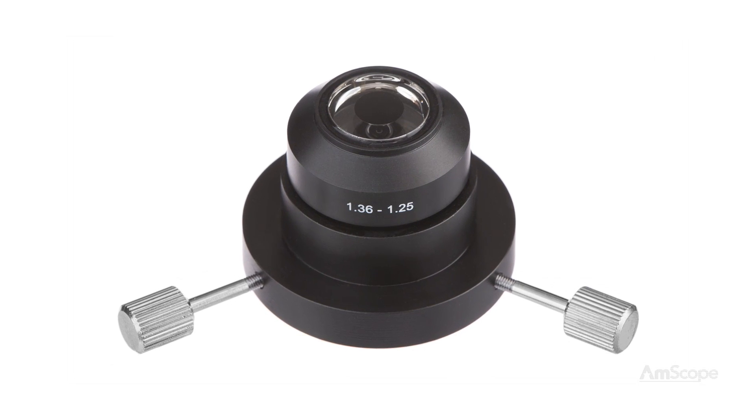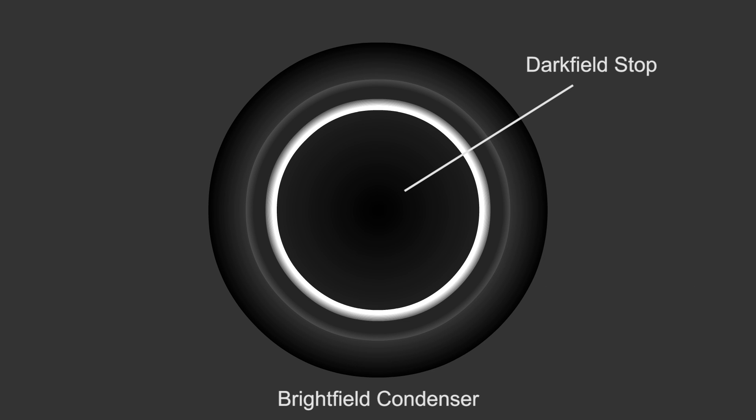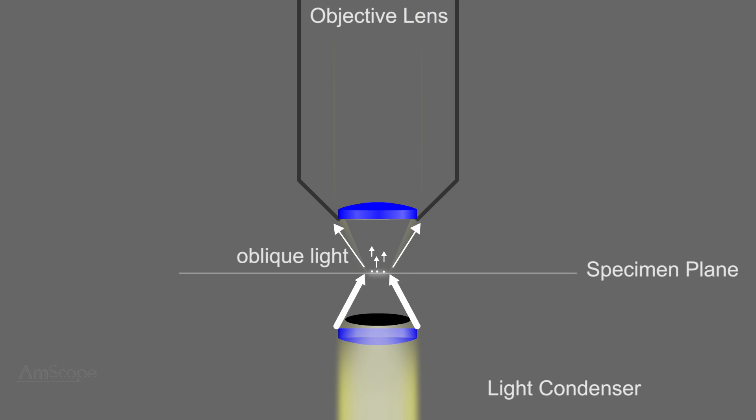At the heart of darkfield illumination is a darkfield condenser. It works similarly to a brightfield condenser, except it includes an opaque disc, or stop, which blocks direct light from entering the objective lens. Instead, only oblique lighting which is refracted by the sample will enter. This results in certain objects being illuminated while the background remains dark.